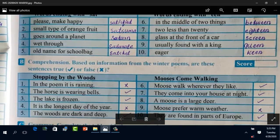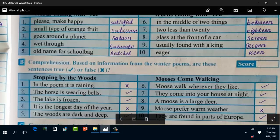Question number B, comprehension. Based on information from the winter poems, are these sentences true or false? In the poem it is raining - false. The horse is wearing bells - true. The lake is frozen - true. It is the longest day of the year - false. The woods are dark and deep - true. Moose walk wherever they like - true. They come into your house at night - true. Moose is a large deer - true. Moose prefer warm weather - false. They are found in parts of Europe - true.